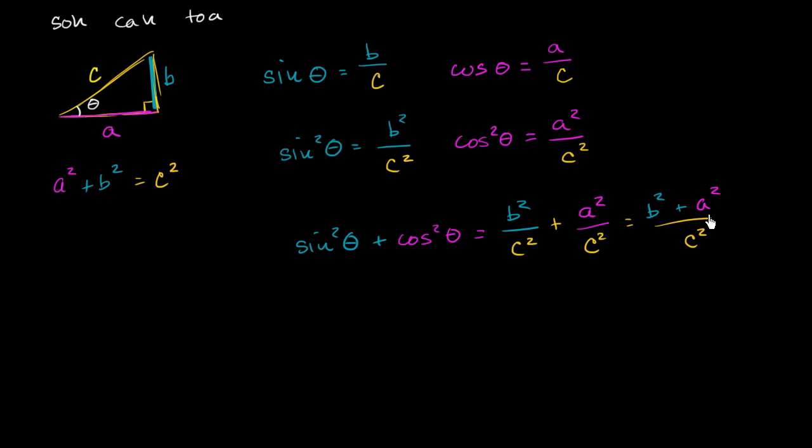Now what is b squared plus a squared? Well we have it right over here. Pythagorean theorem tells us b squared plus a squared, or a squared plus b squared, is going to be equal to c squared. So this numerator simplifies to c squared. And the whole expression is c squared over c squared, which is just equal to one.